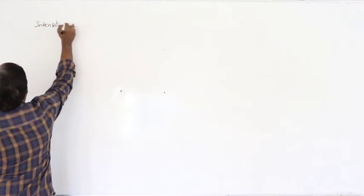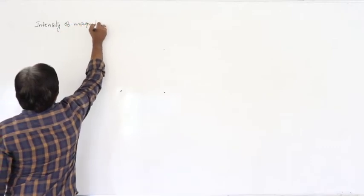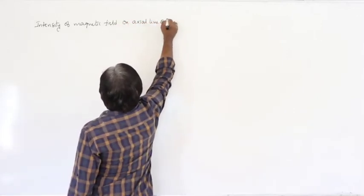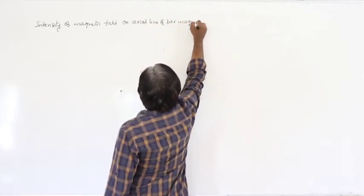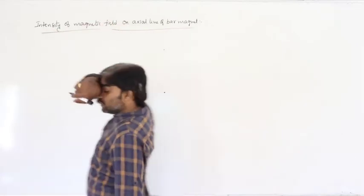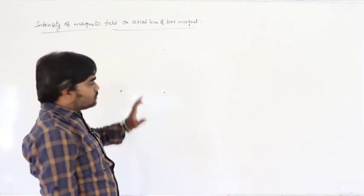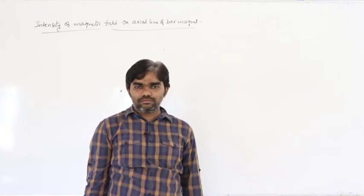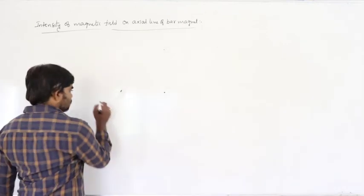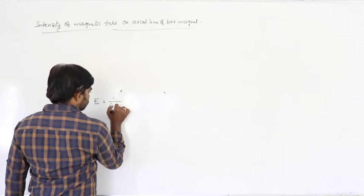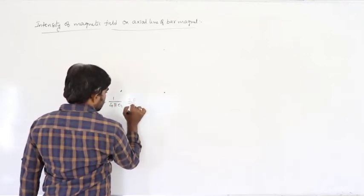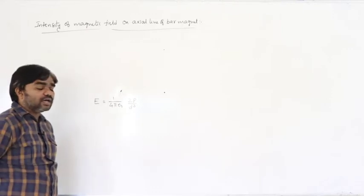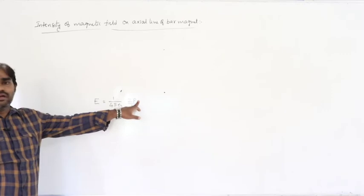Next, we calculate the intensity of magnetic field on the axial line of a bar magnet — the same as we calculated the intensity of electric field on the axial line of an electric dipole in electrostatics. That formula was E = (1/4πε₀) × 2p/r³, where p is the dipole moment.